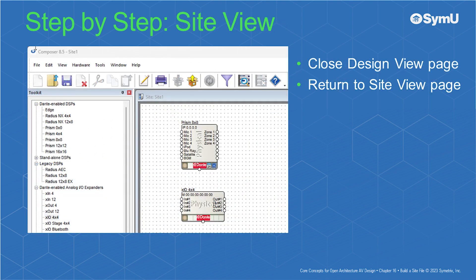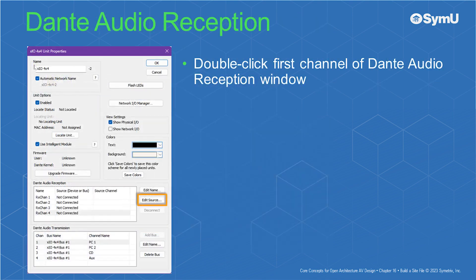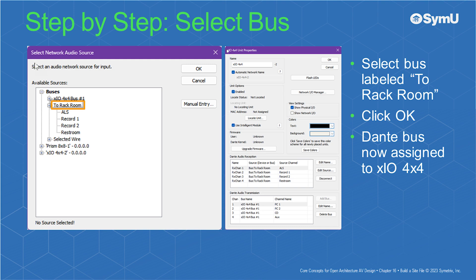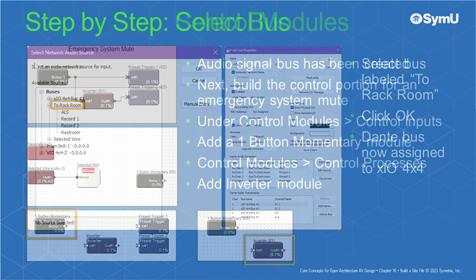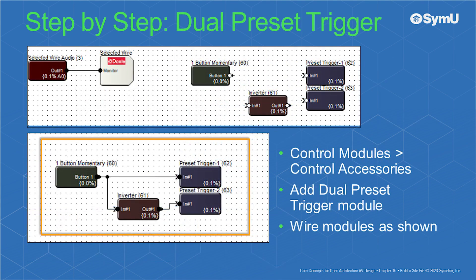Close the design view page and return to the site view page. Right-click the XIO 4x4 and choose unit properties. Double-click the first channel of the Dante audio reception window. Select the bus labeled 'to rack room,' then click OK. The Dante transmit bus is now assigned to the XIO 4x4. Now that the audio signal bus has been created, next build the control portion for an emergency system mute. Under control modules, control inputs, add a one-button momentary module. Under control modules, control processes, add an inverter module. Under control modules, control accessories, add a dual preset trigger module and wire modules as shown.